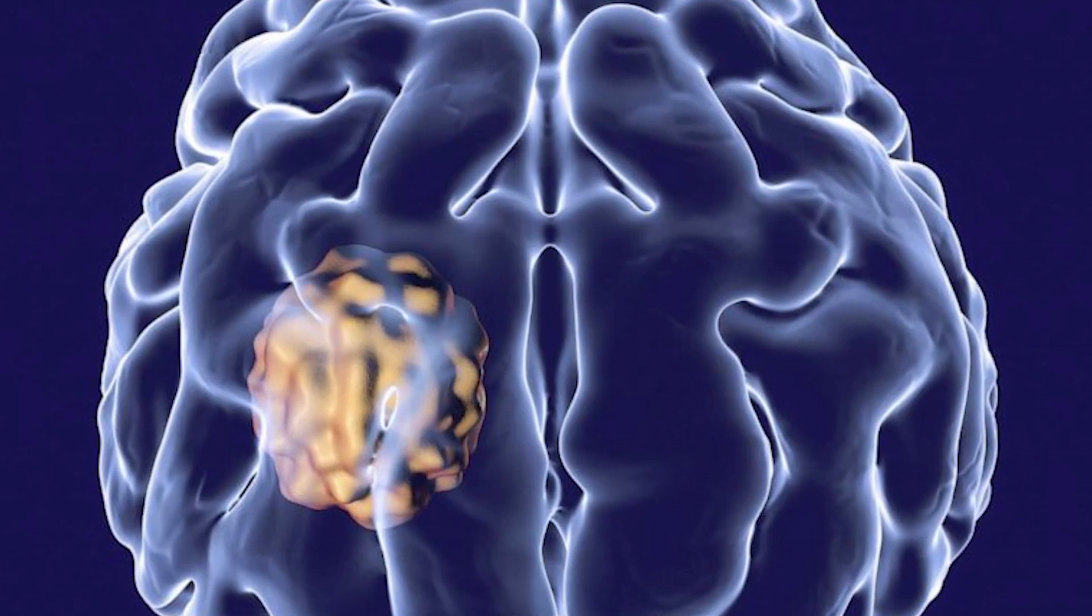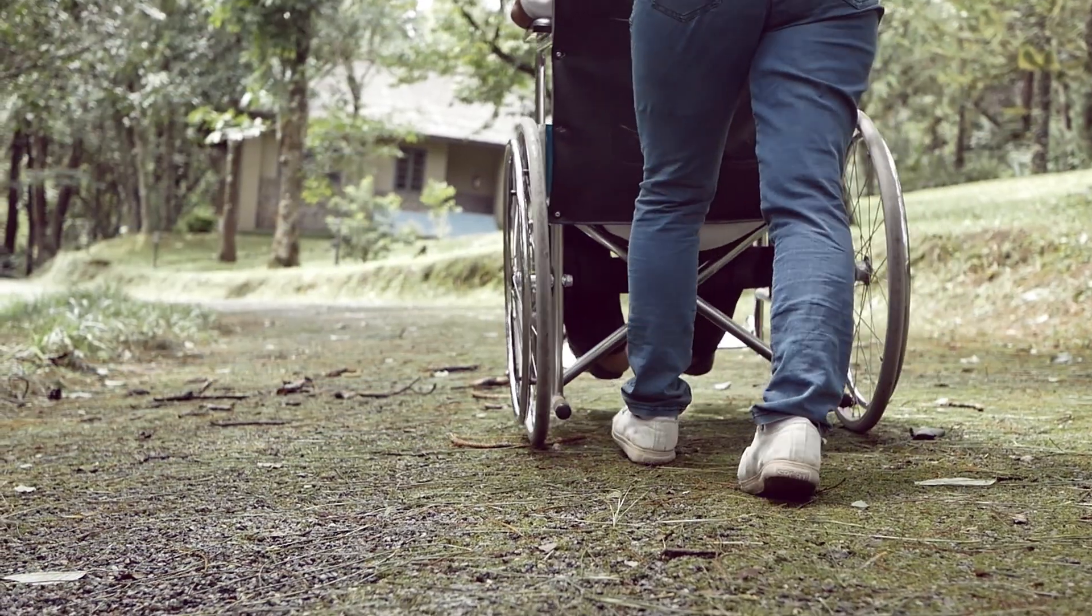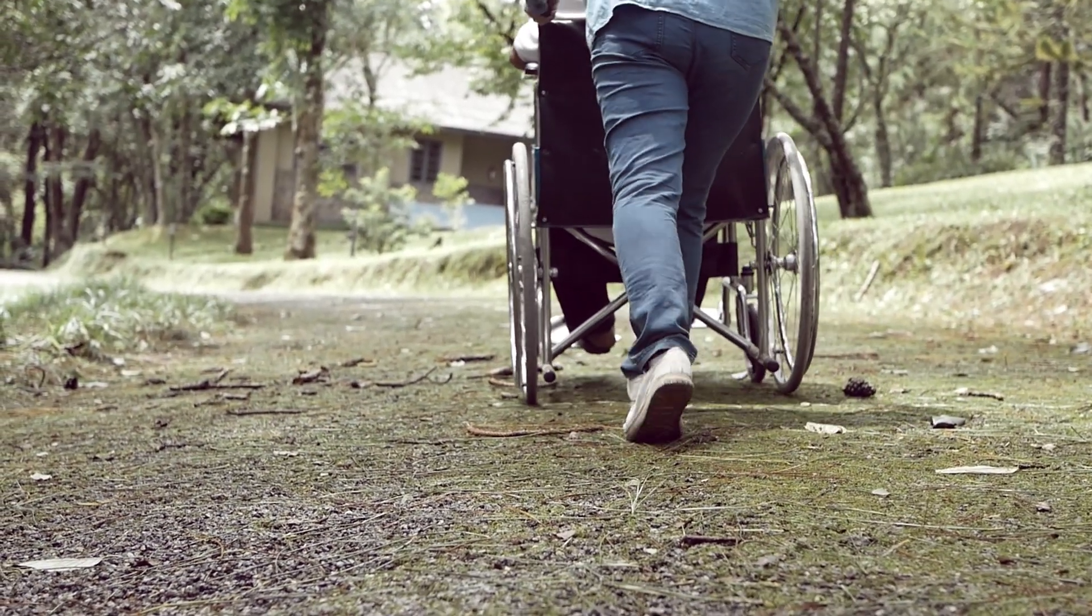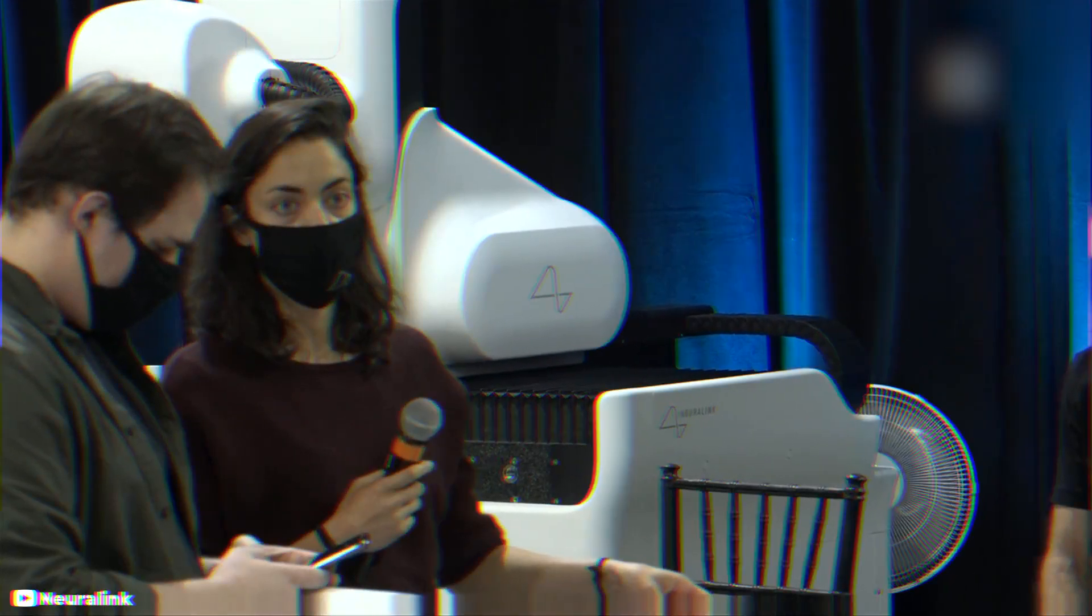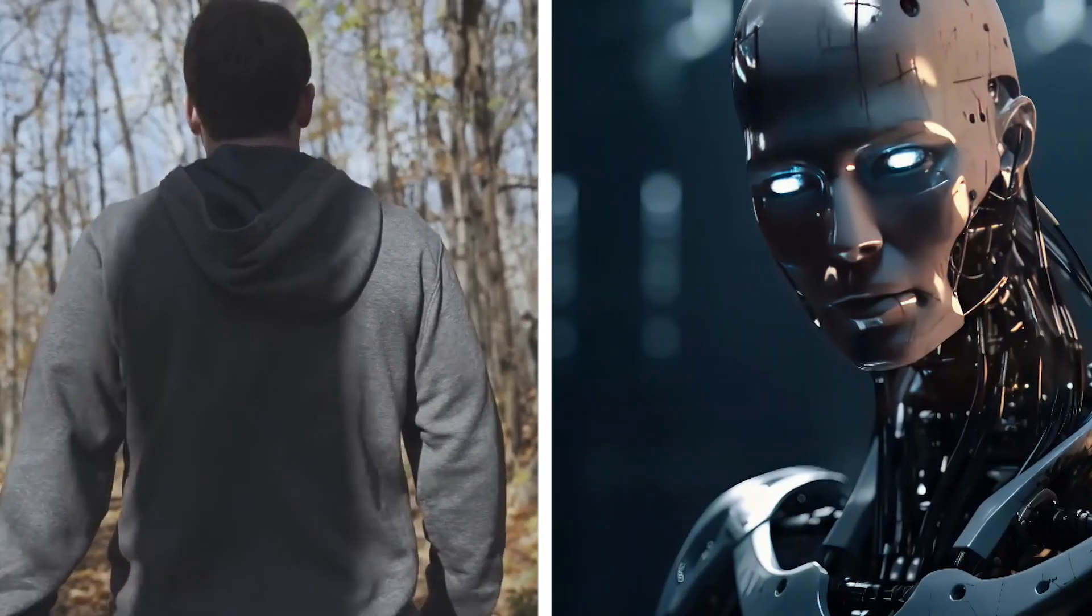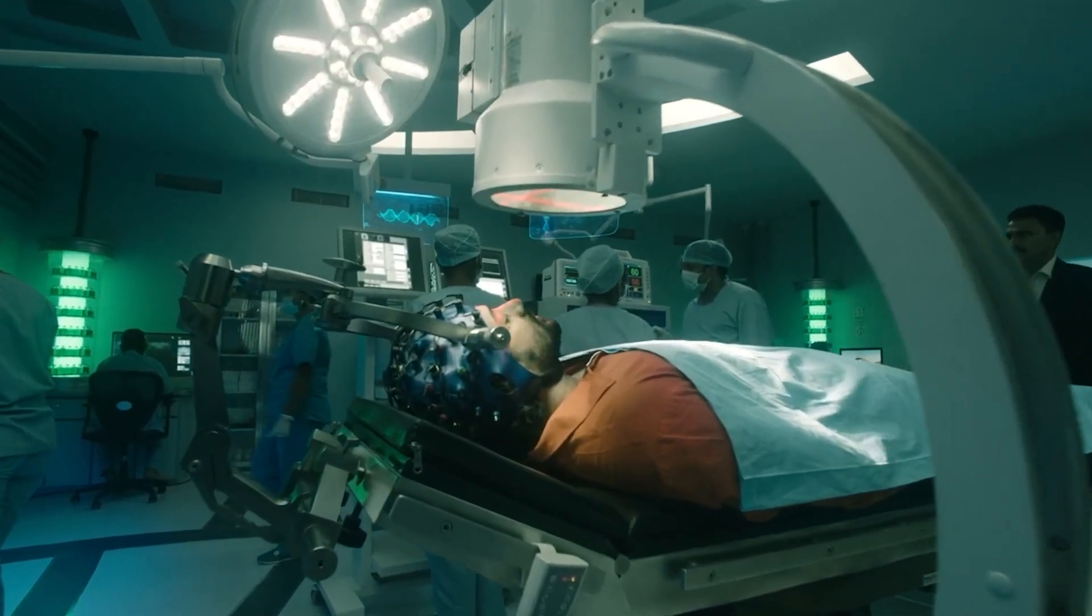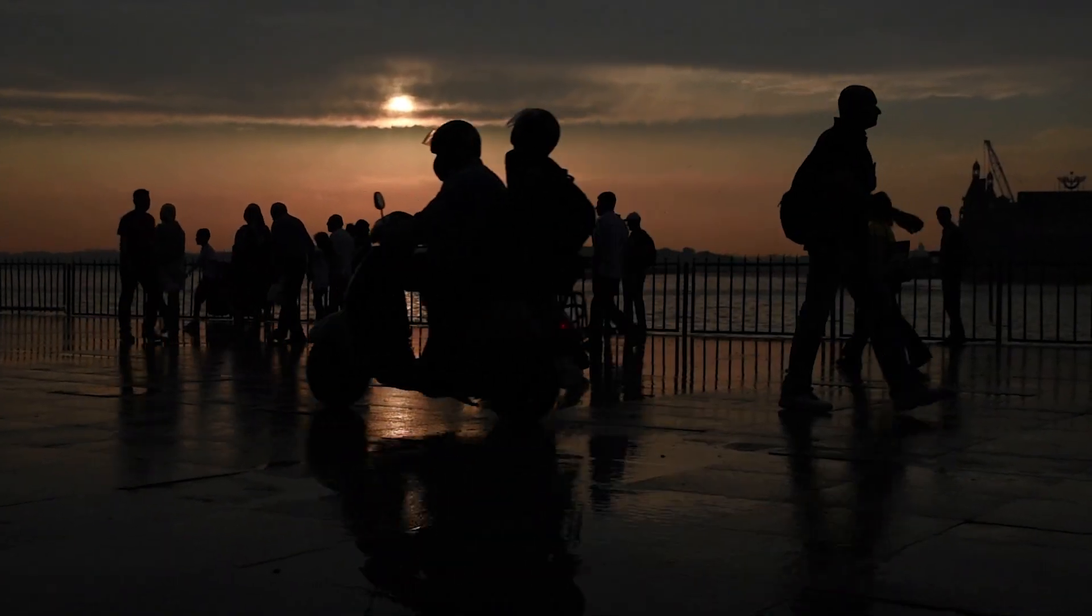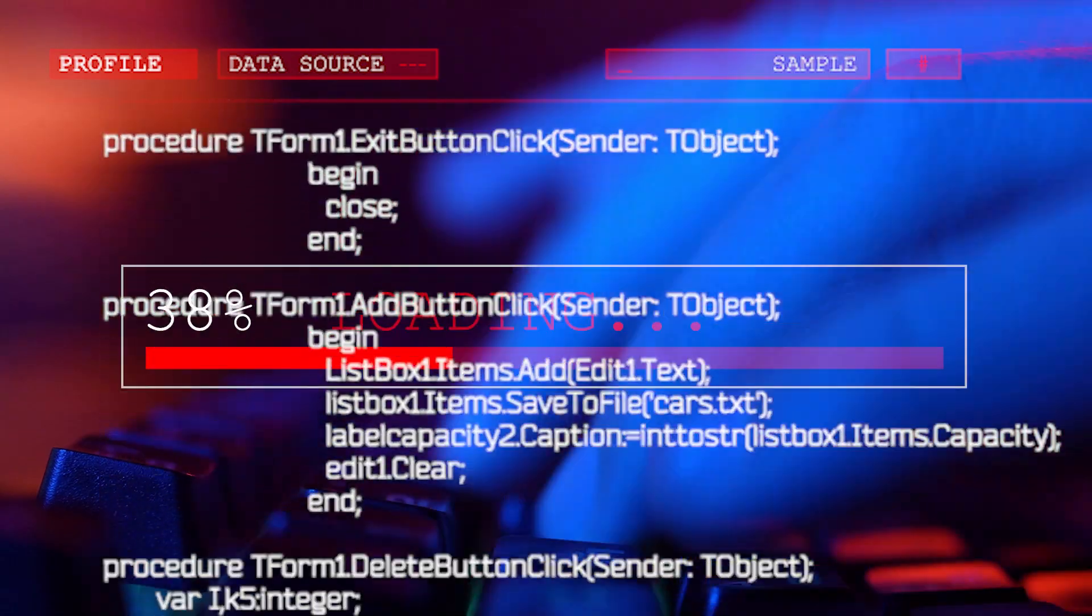If Neuralink is implanted incorrectly, it can lead to infections and inflammation in the brain, which may increase the risk of developing conditions like Alzheimer's disease later in life. Some critics argue that Neuralink blurs the boundaries between natural and artificial, human and machine, and raises ethical concerns about erasing essential limits that define what it means to be human. There are also concerns about privacy and security, as the device could potentially be hacked.